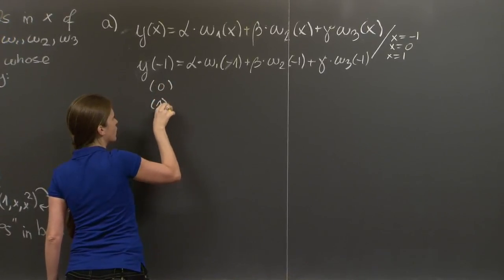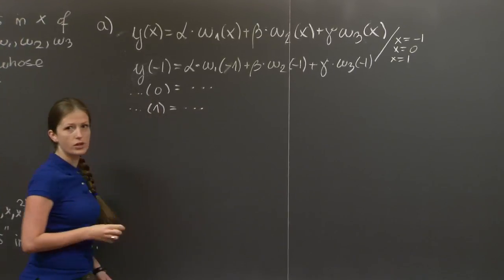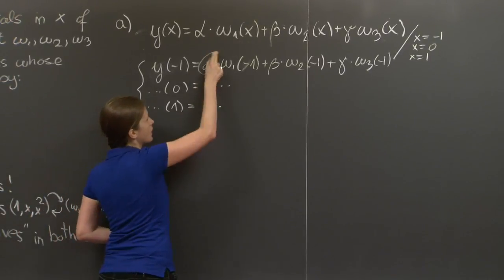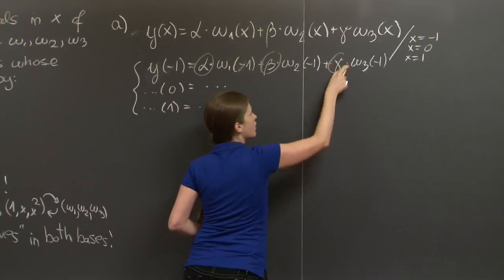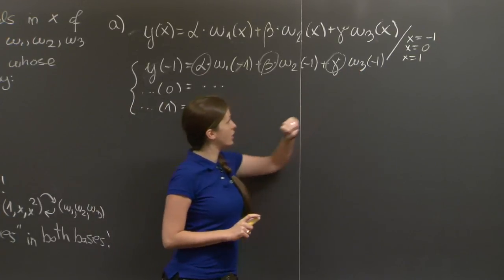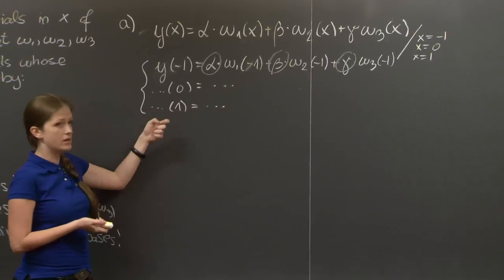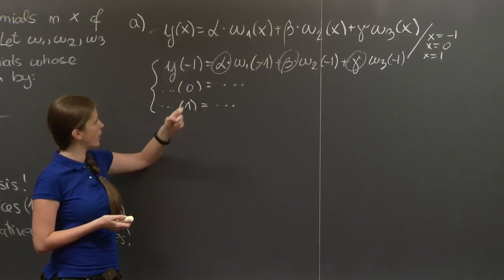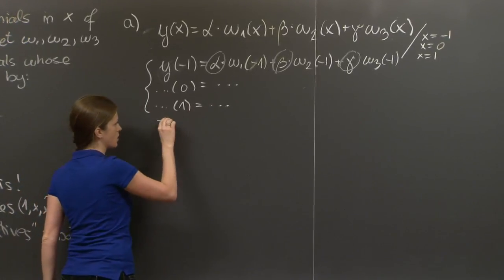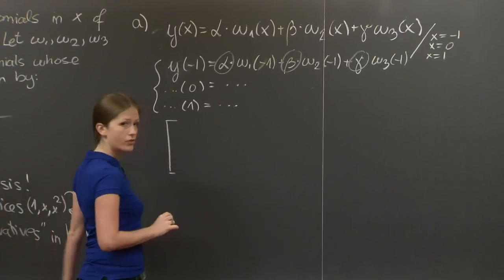And similarly at 0. And similarly at 1. And now let me think of this as a linear system that has unknowns alpha, beta, and gamma, coefficients these values here at -1, 0, and 1. And the right-hand side is y at -1, y at 0, and y at 1.